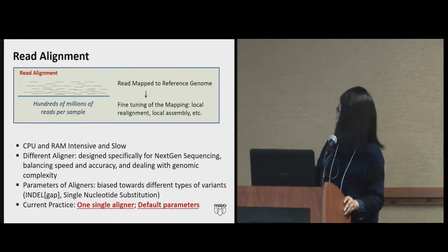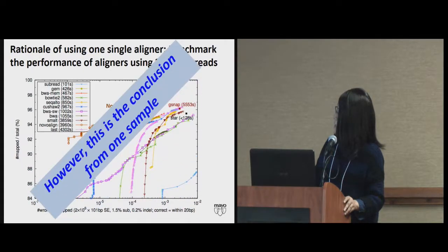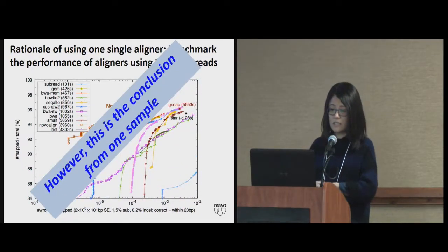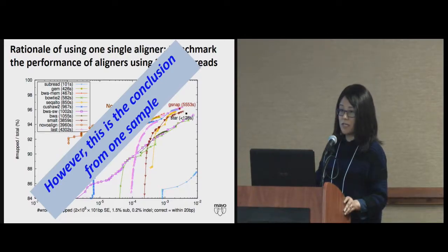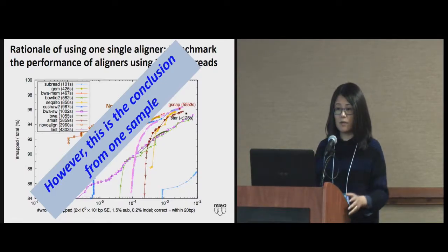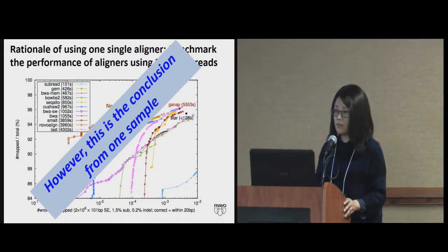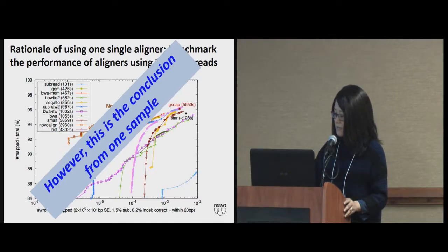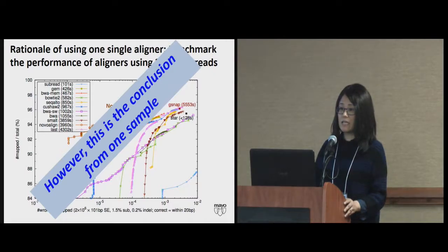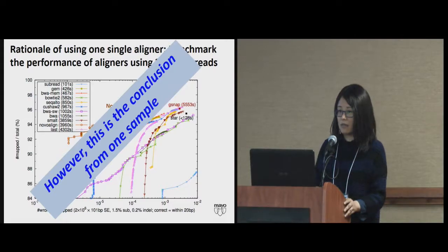Parameters don't matter that much either — or so people thought. However, all these publications justify picking one aligner based on one dataset: 2 million reads of simulated data, or one real dataset from one individual. The conclusions are more or less the same: aligner doesn't matter. But what happens if you're looking at 1,000, 10,000, or 1 million individuals? Does that little bit of error really matter? I'll try to convince you: yes, it really does.